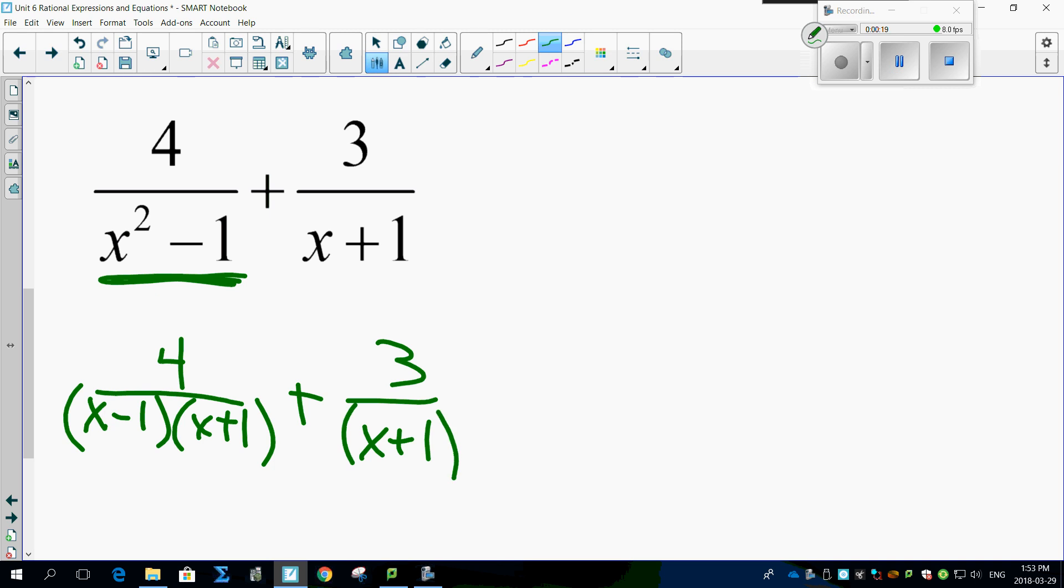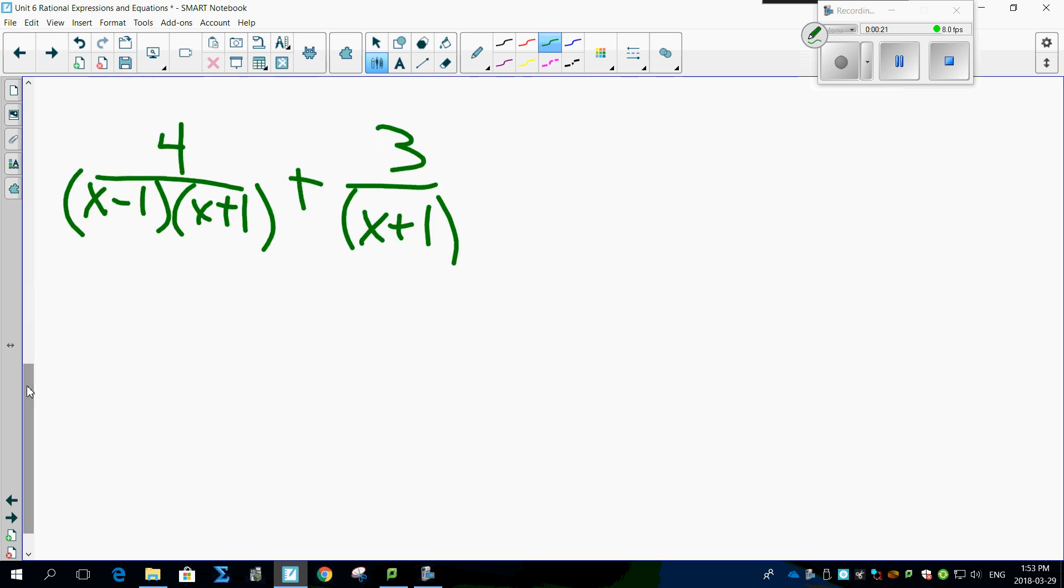So check this out. Look what's missing. Always ask yourself a question. What is missing? What's missing here is an x minus 1. Look, that's going to make it common.